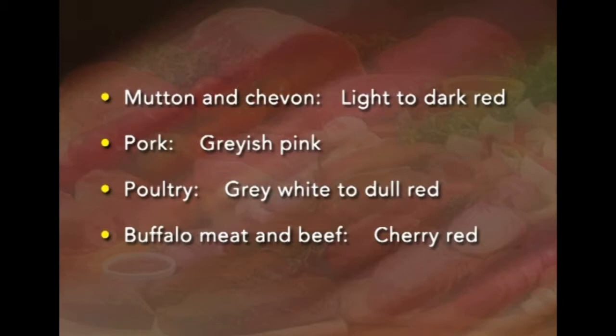Myoglobin content of more active species and muscles is higher than passive ones. Typically, mutton and chevon are light to dark red; pork is generally grayish pink; poultry is gray-white to dull red; and buffalo meat and beef is cherry red. At the time of purchase, brown color is usually associated by consumers with meat stored for a long time. To prevent brown color formation, fresh meat is usually packed in films with a very good oxygen transmission rate.